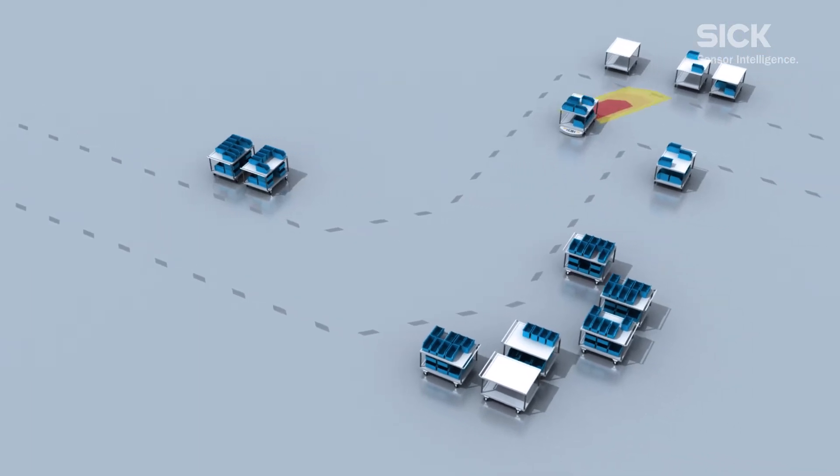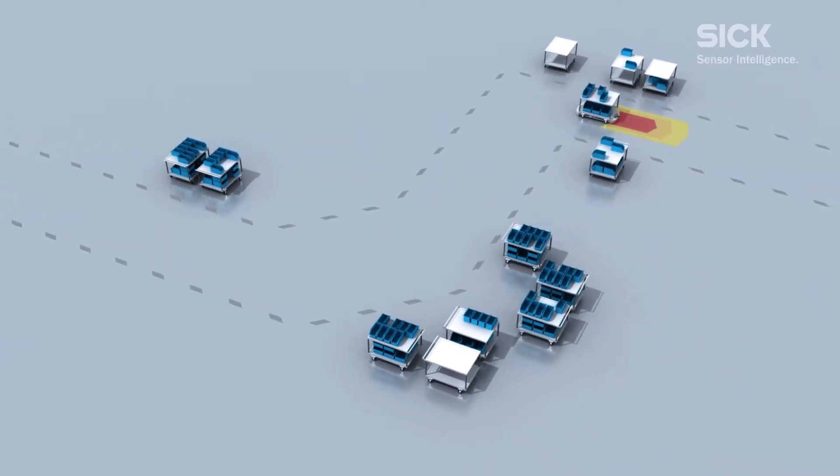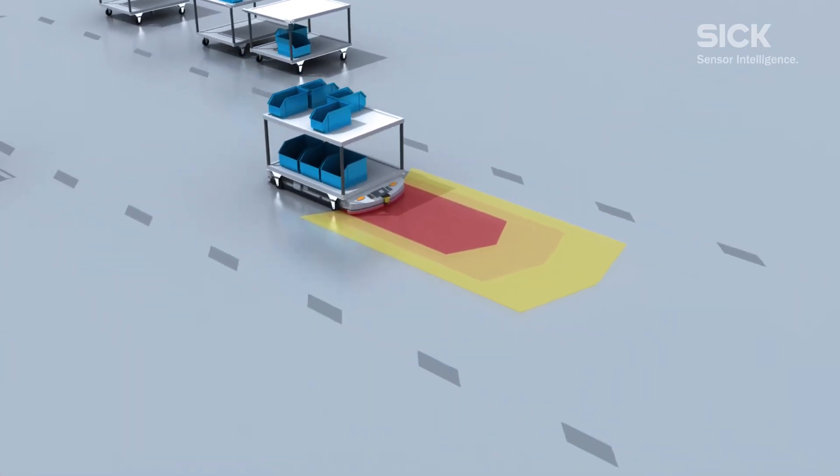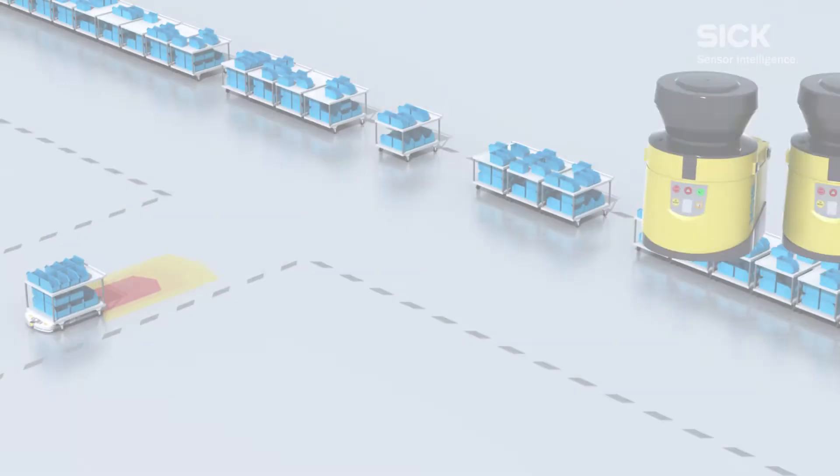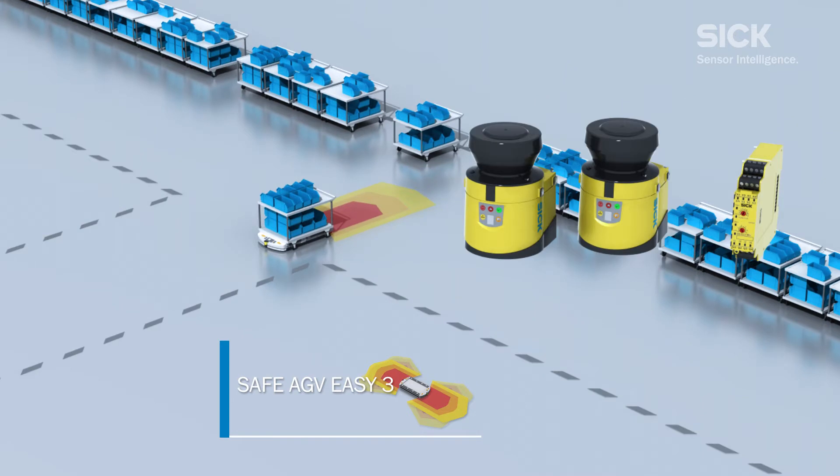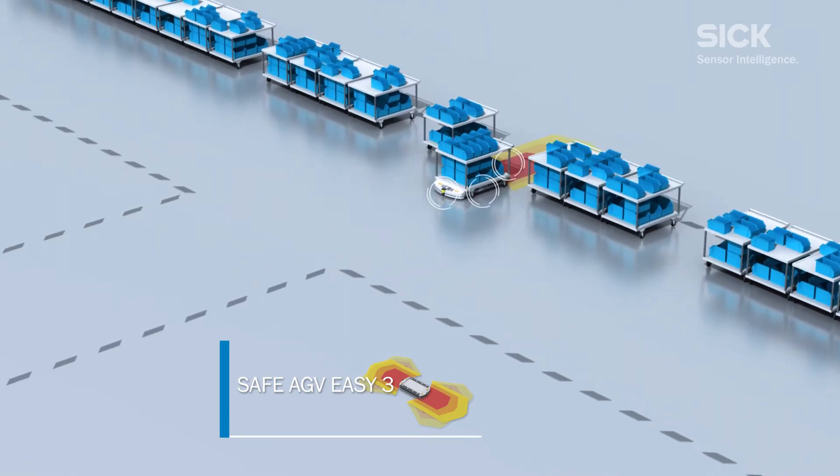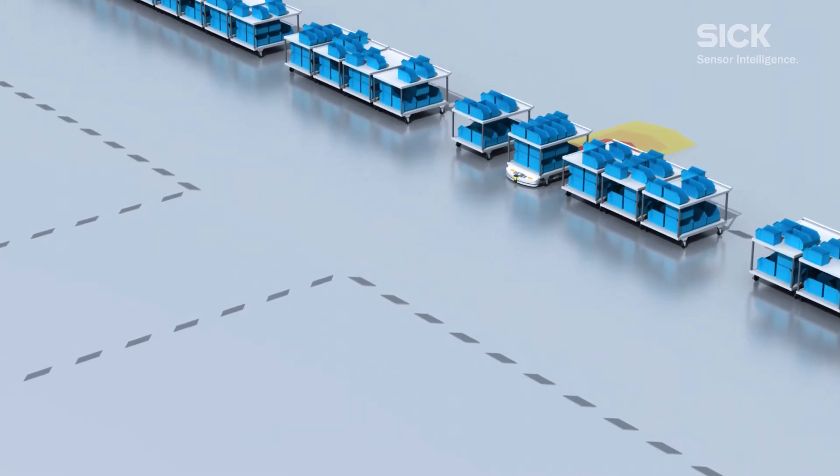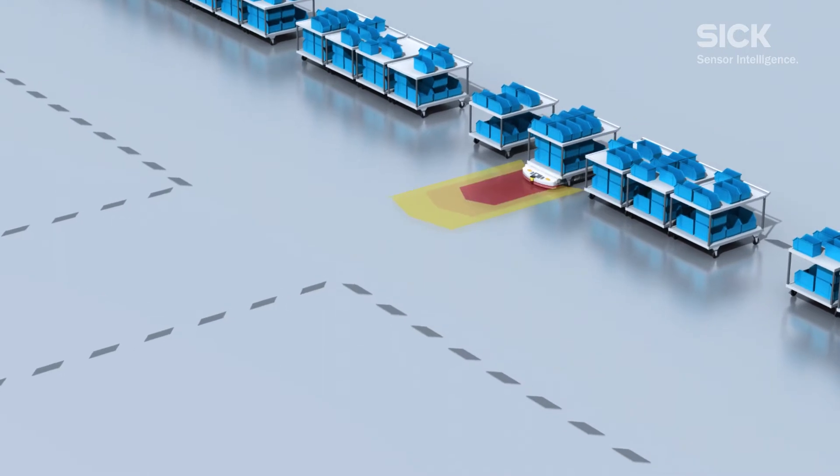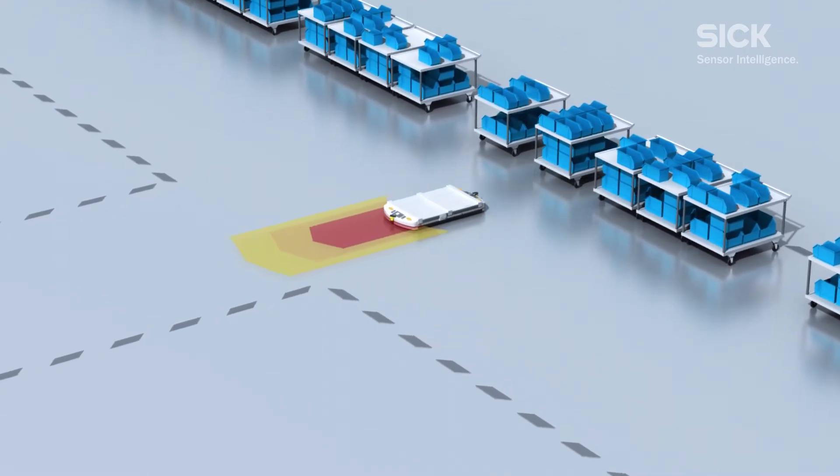The easy-to-configure Flexi Classic safety controller keeps the safety chain closed. For industrial trucks with two main directions of travel, two S300 professionals and one Flexi Classic safety controller are used. This makes your AGV flexible and safe.